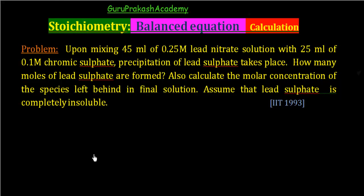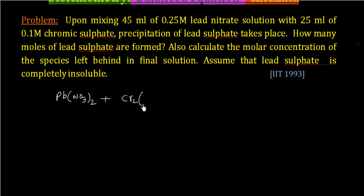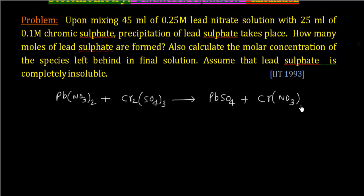So first, let us write the balanced chemical equation. We have lead nitrate Pb(NO3)2 reacting with chromium sulfate Cr2(SO4)3. This gives PbSO4 plus chromium nitrate Cr(NO3)3, where chromium's oxidation state is 3. Now let us balance chromium: 2 chromium on this side, so 2 chromium on the other side. We have 6 nitrate, so we multiply by 3. Now we have 3 lead, so multiply by 3. Check sulfate: 3 sulfate on each side. So this is the balanced chemical equation, and PbSO4 is a precipitate.